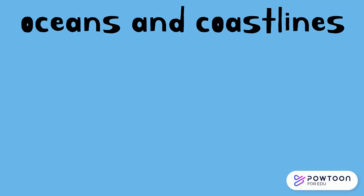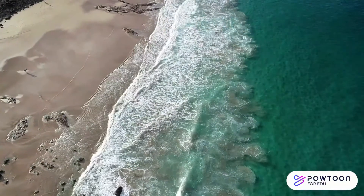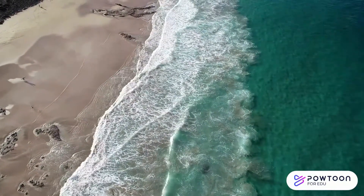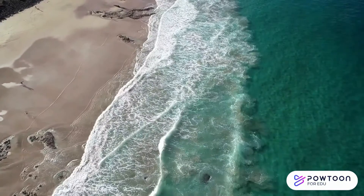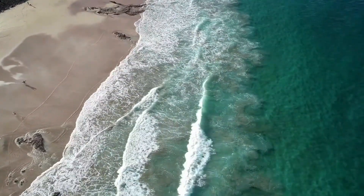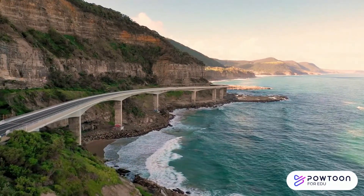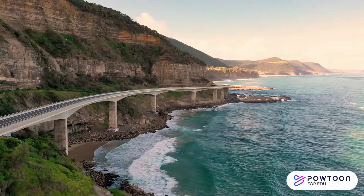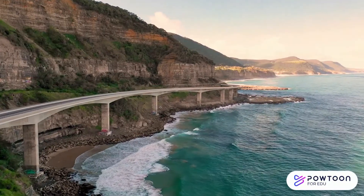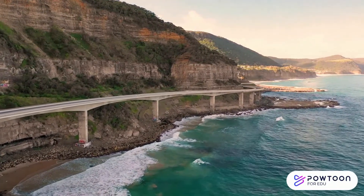Moving towards the water's edge, we encounter oceans and coastlines. Oceans cover a vast majority of the Earth's surface and coastlines are where the land meets the sea. Coastlines can feature beaches, cliffs and other unique formations created by the constant interaction between land and water.